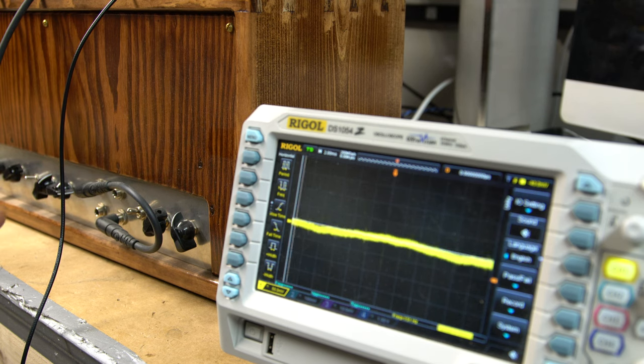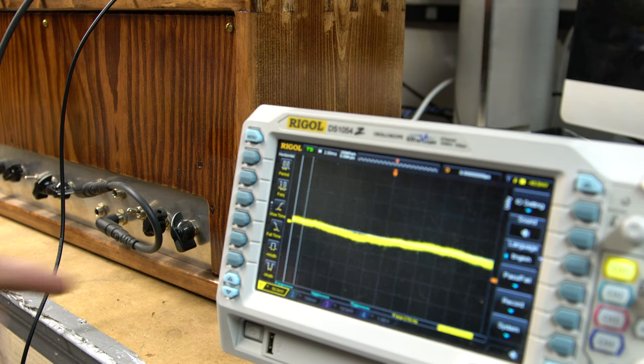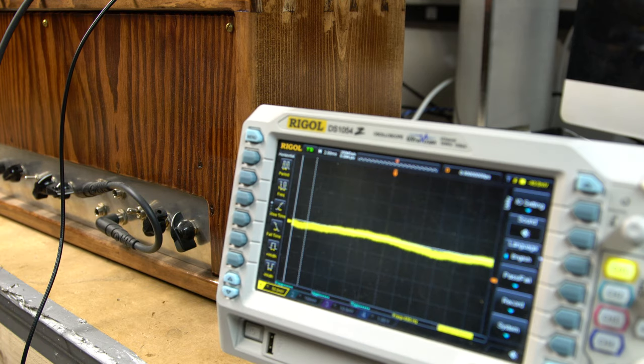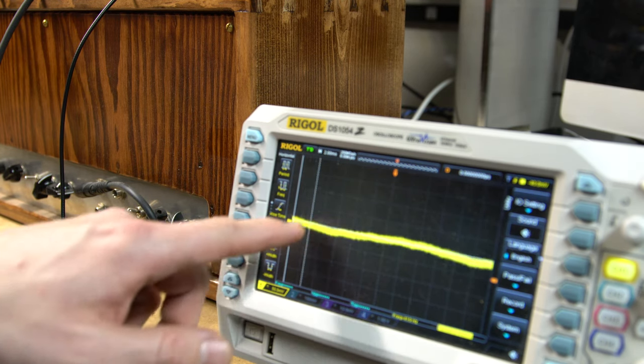You can see a very small wavering going on here, but we're at 50 millivolts per division and it's barely covering a division.